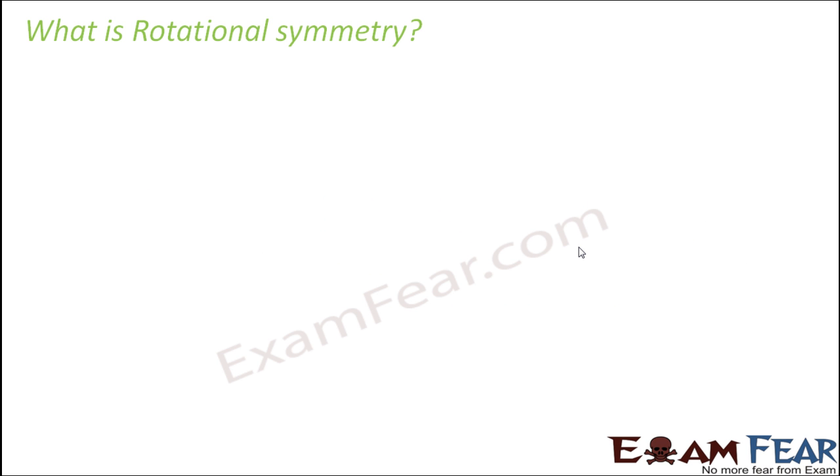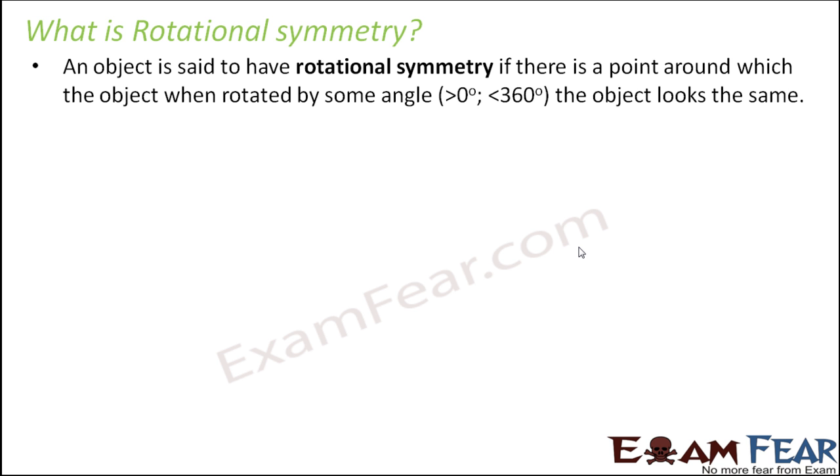Now let us understand what exactly is rotational symmetry. An object is said to have rotational symmetry if there is a point around which the object, when rotated by some angle, looks the same.